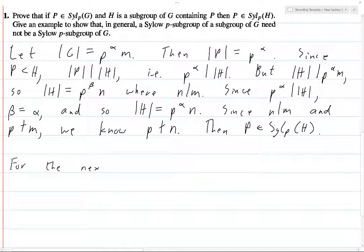So for the next part, what we're looking for is we want to find examples of G, H, and P, where P is still a P Sylow subgroup of a subgroup of G, but it's not... so we want G, we want P, H, and G, where P...